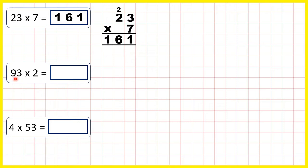Now 93 times 2. We can set this out in the same way. 3 times 2 is 6, and that's a single digit number, so we don't need to write anything up here. Instead, we can write the 6 in our answer line.